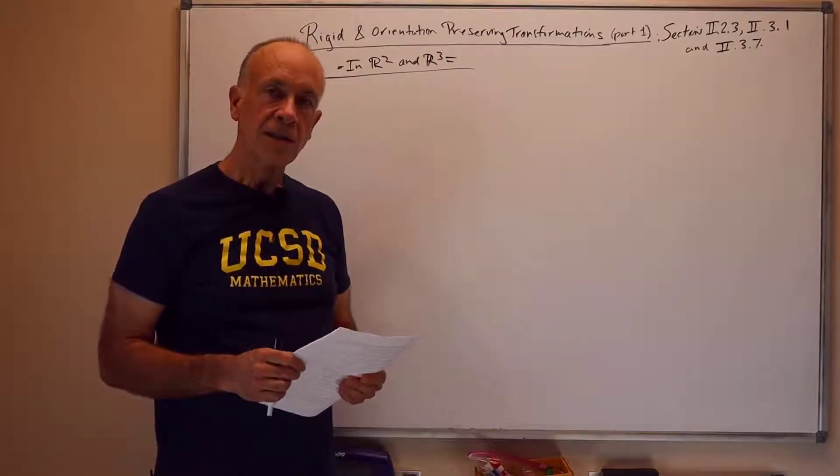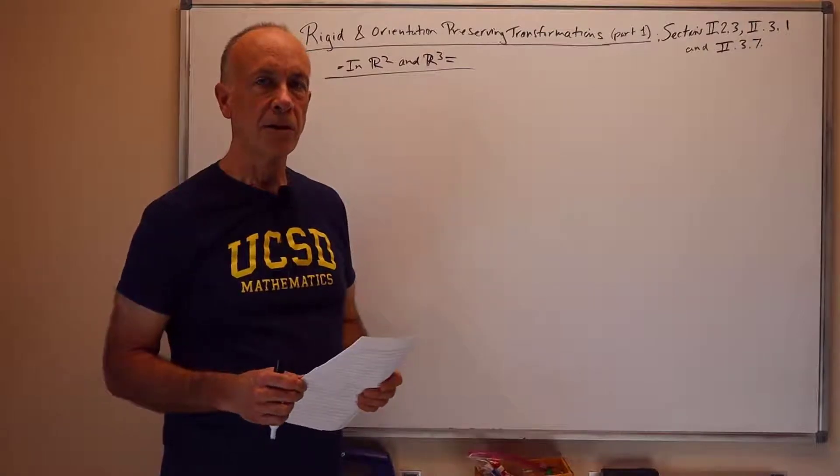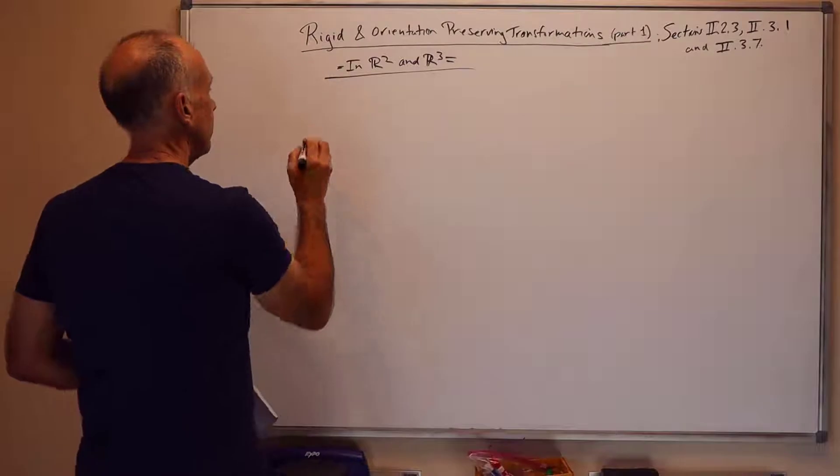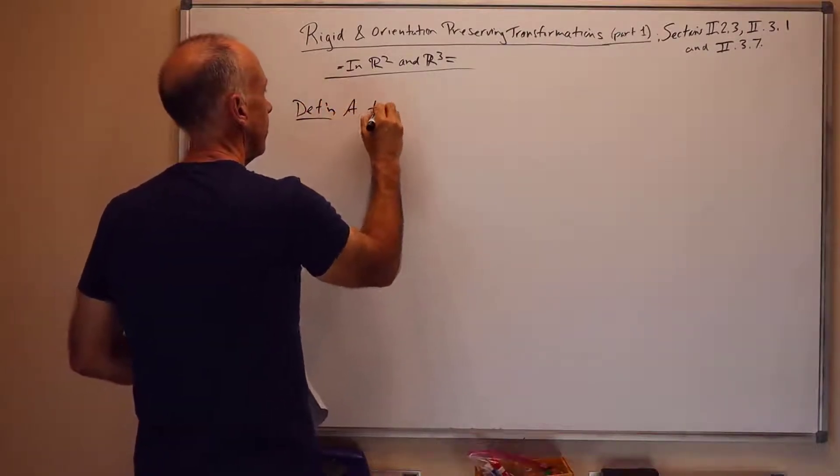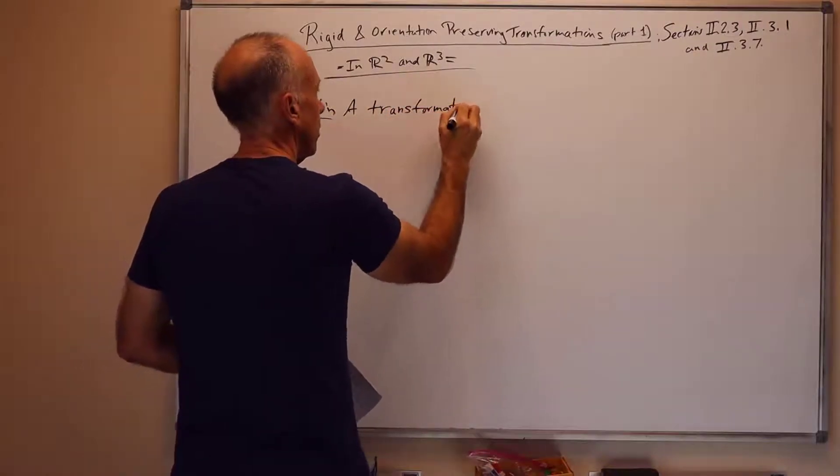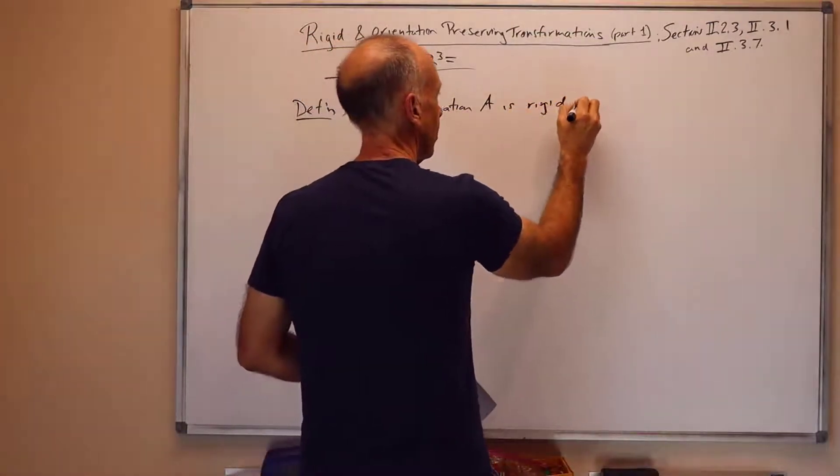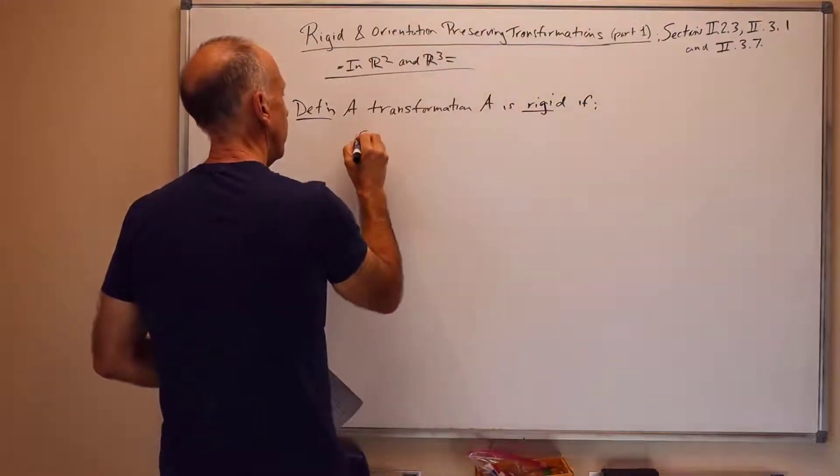For the moment, this is just an introductory lecture to give the definitions and the basic properties in both R2 and R3 of these types of transformations. So, let's start with the definition of rigid. A transformation A is rigid if the following conditions hold.